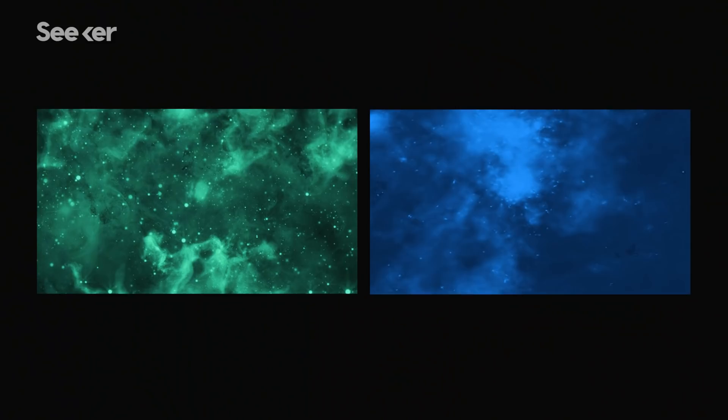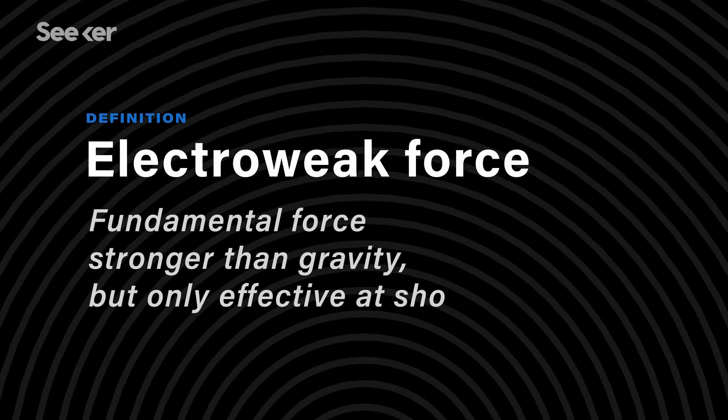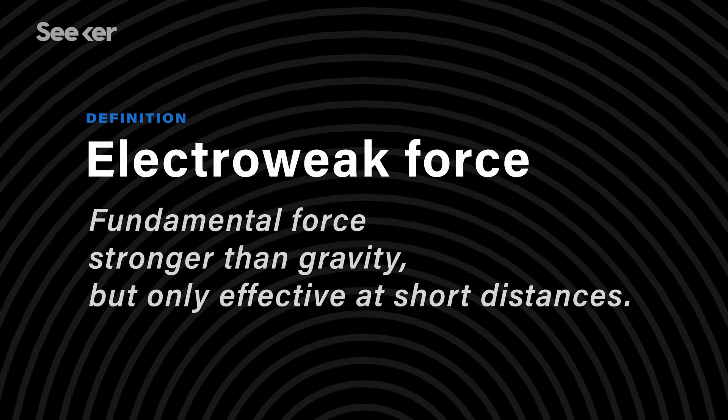These are particles that are heavy, and that's where the massive comes from. And weakly interacting means that they have an interaction strength that's maybe around the electroweak force.